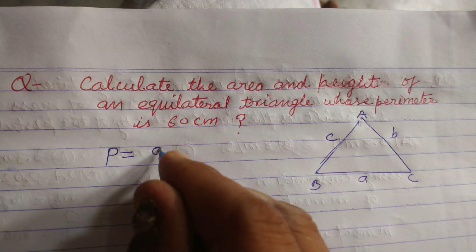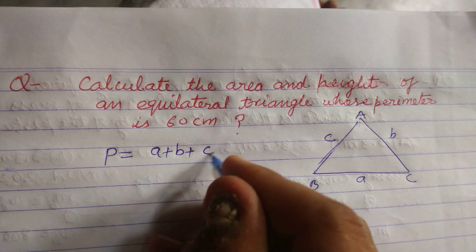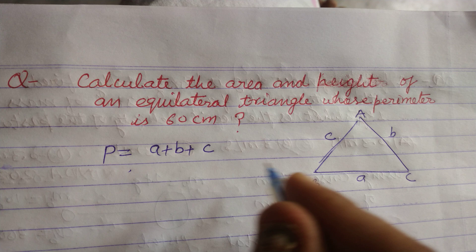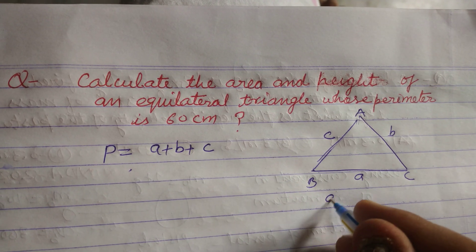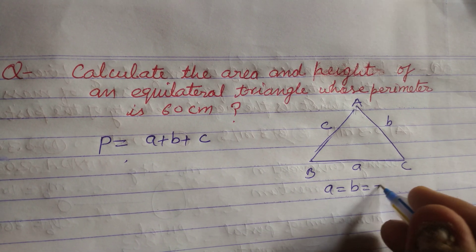So what is perimeter? Perimeter is the sum of all sides of a triangle, and this is equilateral triangle, therefore a equal to b equal to c.